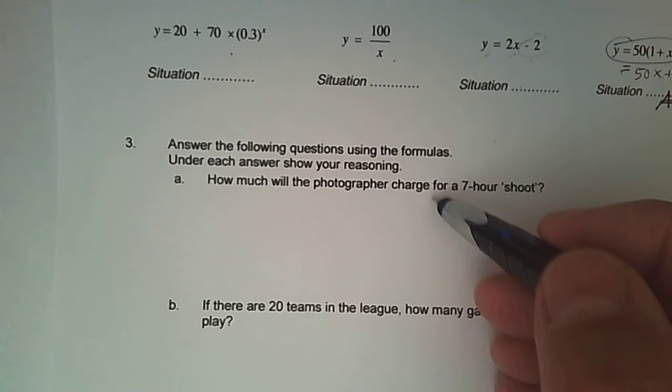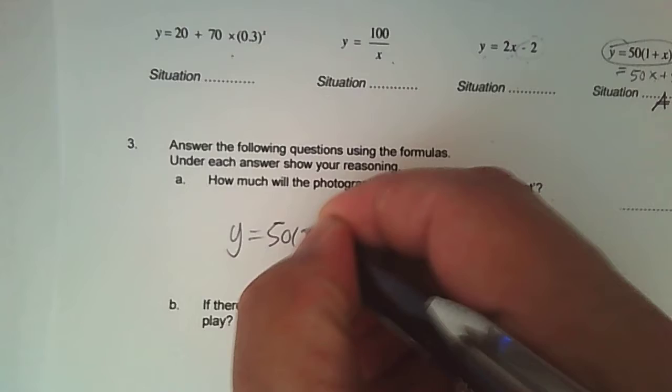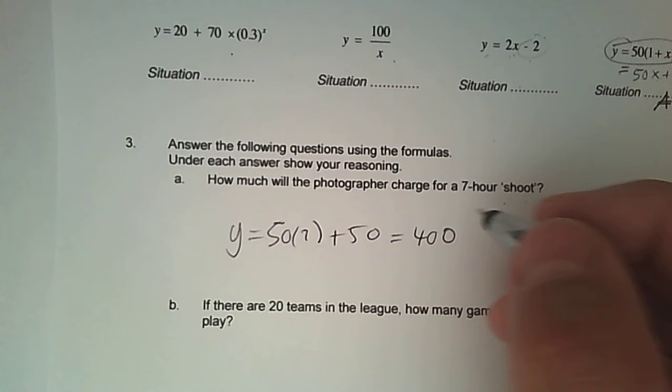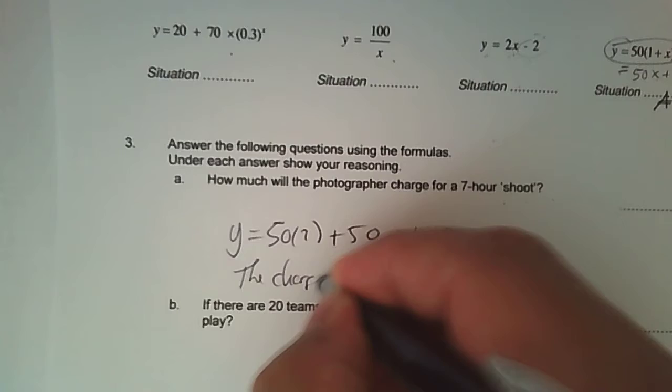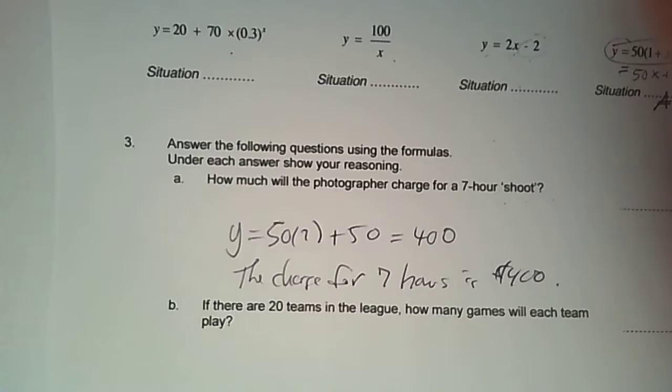Now let's go to the second page. What's the question that goes with it? So how much will the photographer charge for a seven hour shoot? So all I have to do is plug in. And that looks to be $400. So the charge for seven hours is $400. Perfect. All right, three more. This is a little bit easier than yesterday, I think.